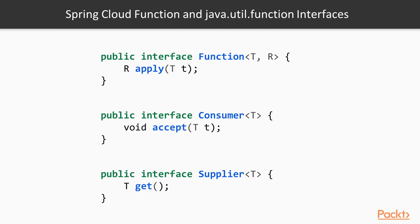When the Spring team were thinking about how to support building Functions as a Service on various cloud platforms, they were drawn to three interfaces in JDK 8, which the Spring serverless developer would implement. Starting at the top, we have the Function interface — effectively taking a value, processing it, and returning something. This is going to be the most common one; typically with functions you would want to take an input, process it, and provide an output.